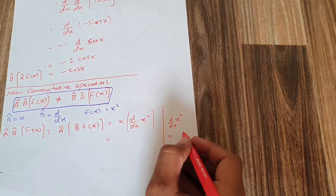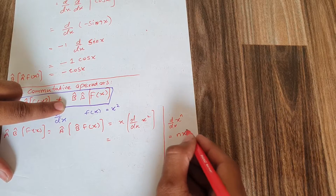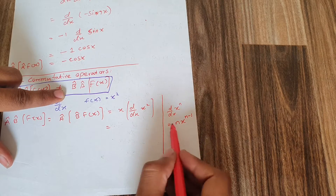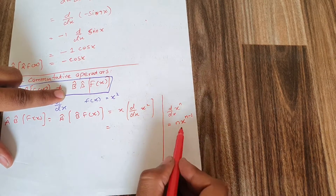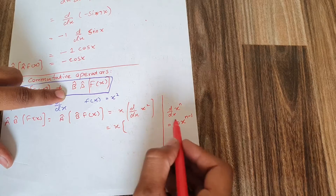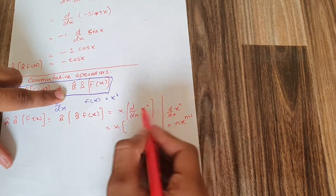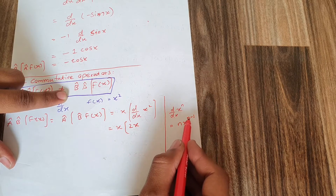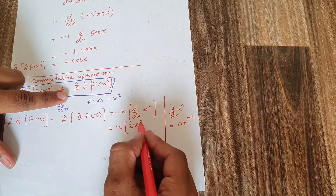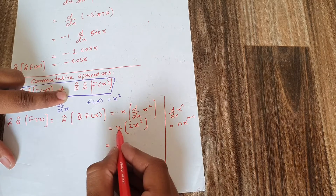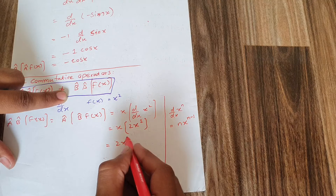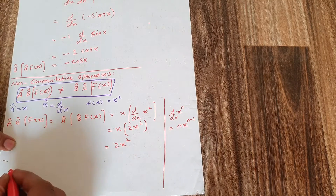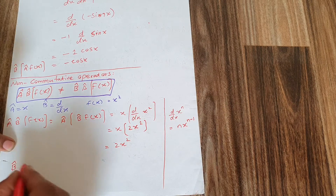Using the power rule formula: the derivative of xⁿ equals n·x^(n-1), the power comes in front. Applying this, the derivative of x² gives 2x. Then x multiplied by 2x gives an answer of 2x².